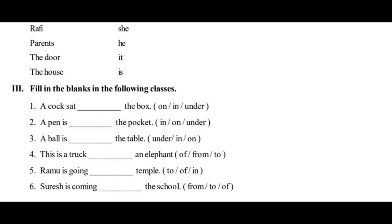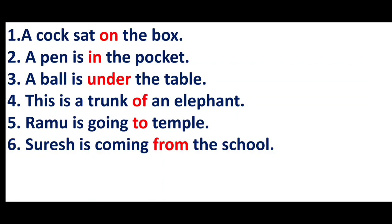Fifth one: 'Ramu is going dash temple.' Going is usually followed by the preposition 'to.' Ramu is going to temple. Sixth one: 'Suresh is coming dash the school.' Suresh is coming from school — from the school. Coming from the school. So the answer is from. Answers: First: on the box. Second: in the pocket. Third: under the table. Fourth: of an elephant. Fifth: to temple. Sixth: from the school.